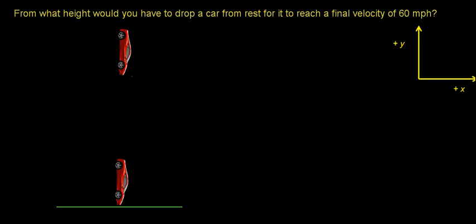In the last video, we calculated the horizontal distance a Ferrari travels while it accelerated at a rate of 8.1 meters per second per second. We figured out that that distance was 44.1 meters — the Ferrari needed 44.1 meters to go from rest to a final velocity of 60 miles per hour.